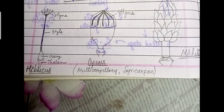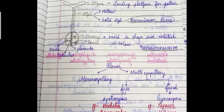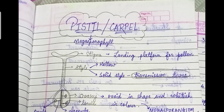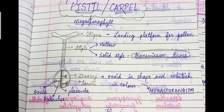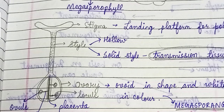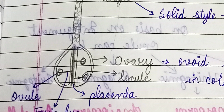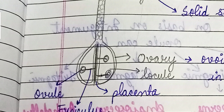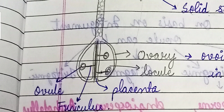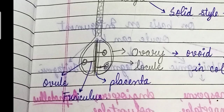The pistil or carpel is also known as the megasporophyll. The structure of the carpel includes the stigma — whose surface may be rough or smooth — connected with the ovary with the help of the style. The ovary consists of locules or hollow chambers, within which there is a presence of ovules. Each ovule is connected with the central line of the body known as the placenta.